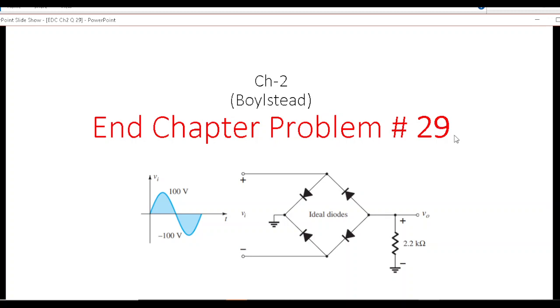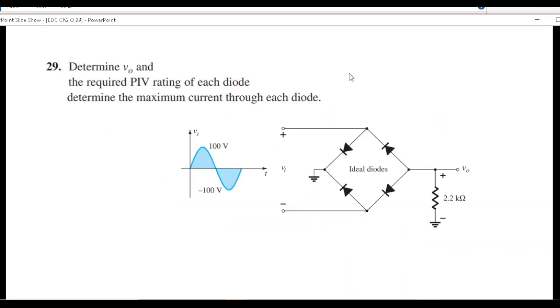In this video we'll be solving end chapter problem number 29 from chapter 2 of Mr. Boylestad's book on electronic devices and circuits. The question says determine V0, the output voltage across this resistor, the required PIV rating of each diode, and determine the maximum current through each diode.